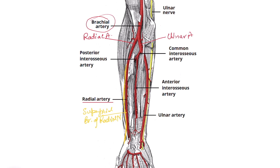The bulk of the front of the forearm is perfused by the ulnar artery, which provides blood to nearly all the muscles of the front of the forearm. So ulnar artery is the major terminal branch — the continuation — of brachial artery, while radial artery is a minor branch of brachial artery.